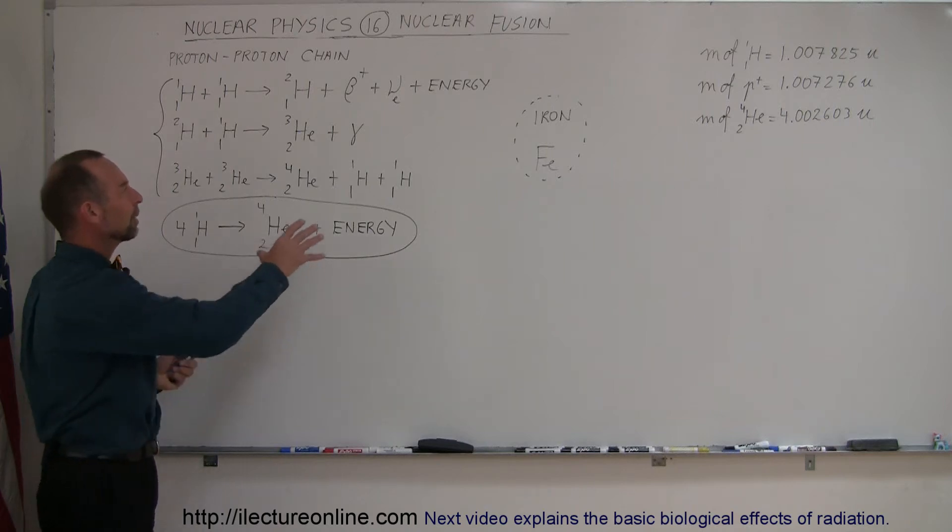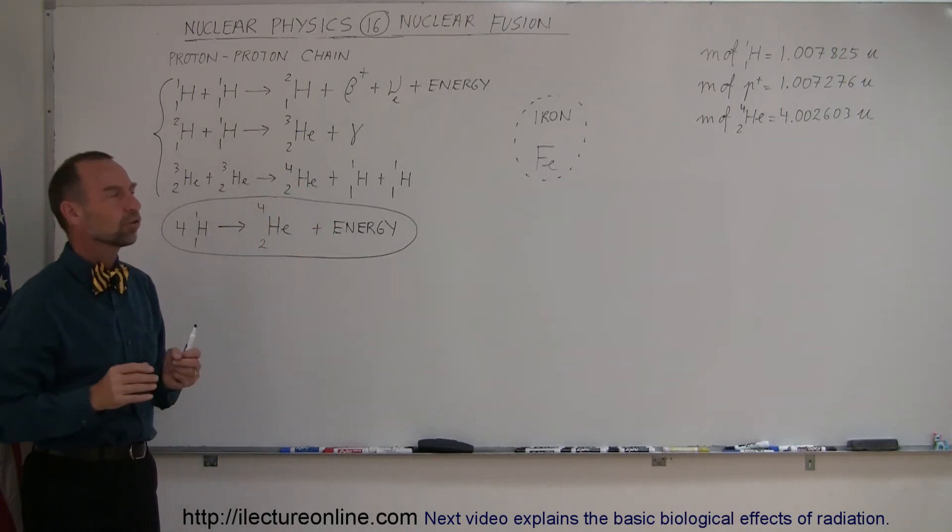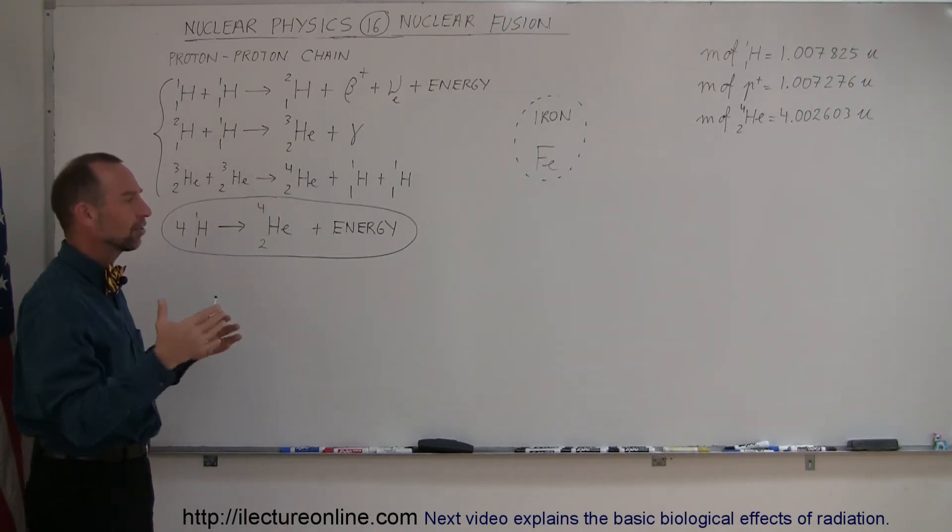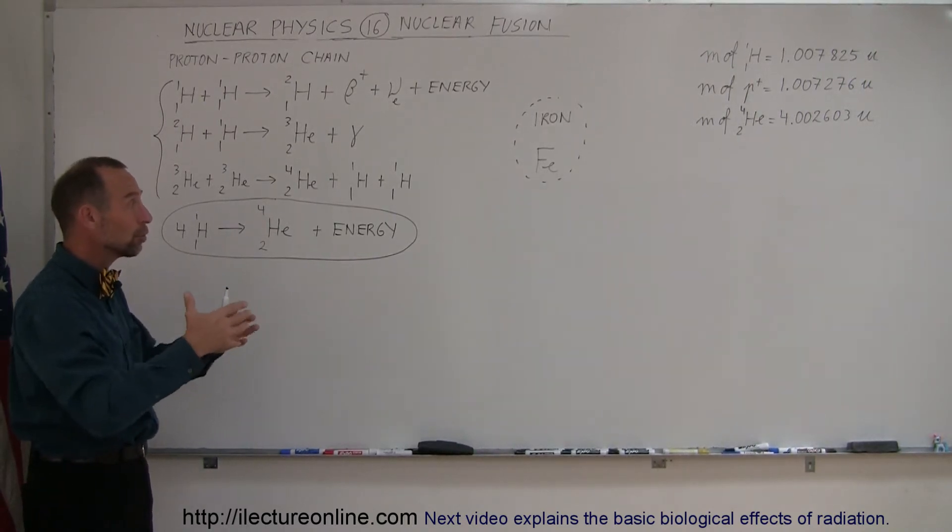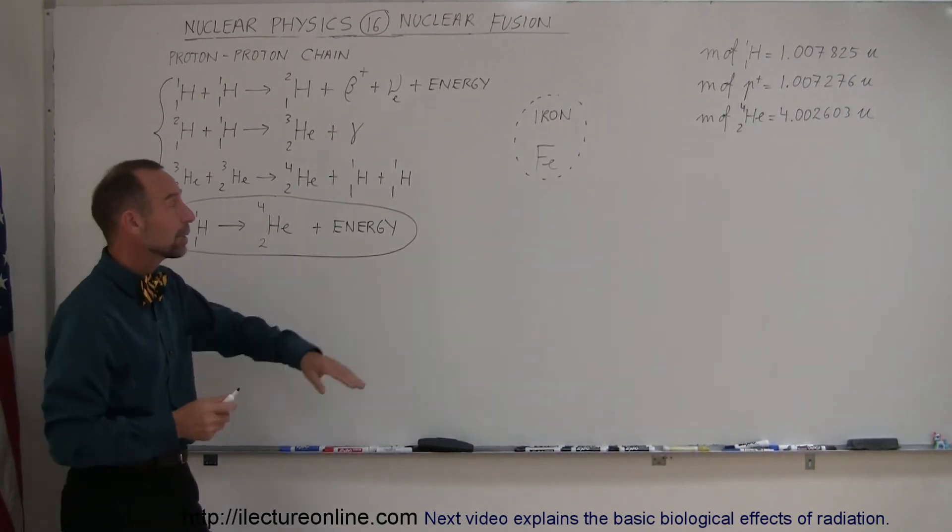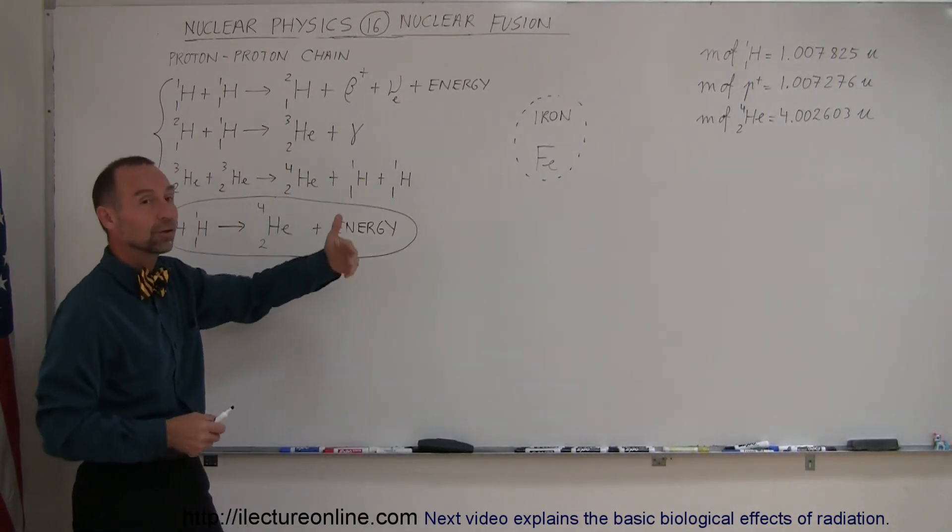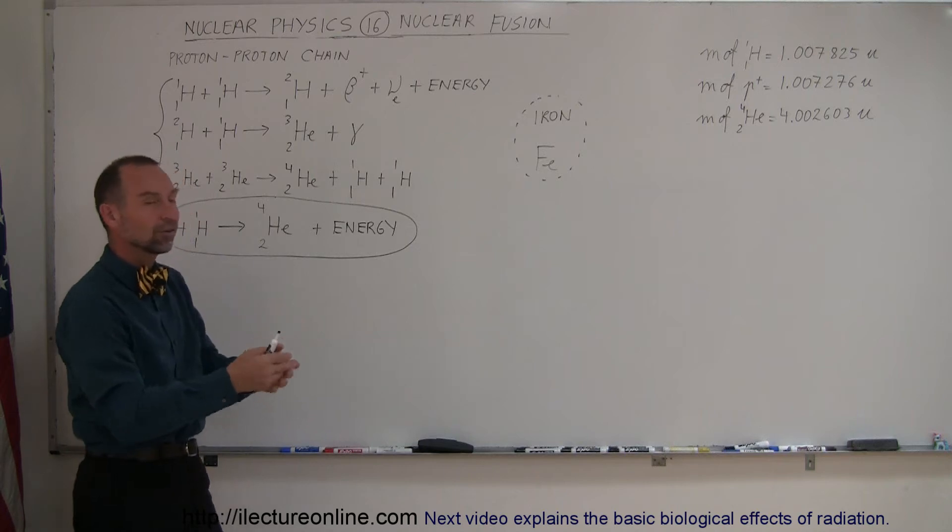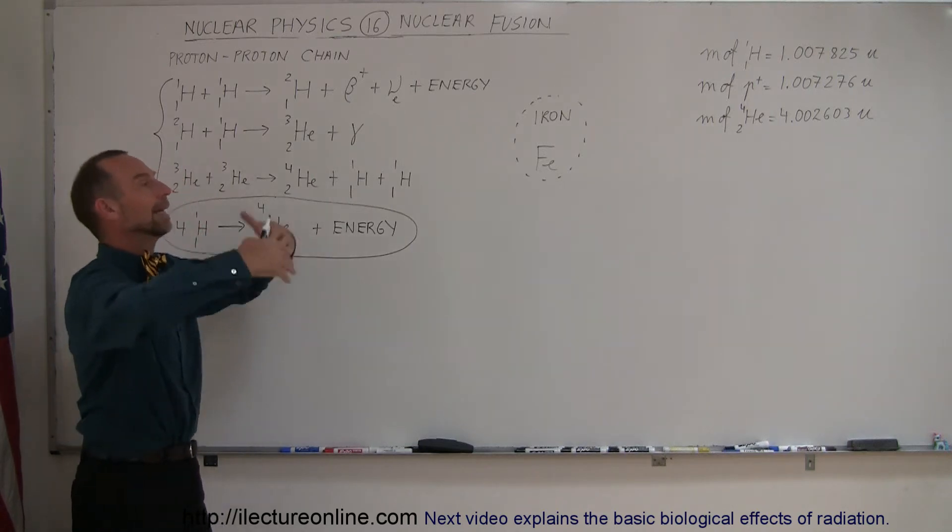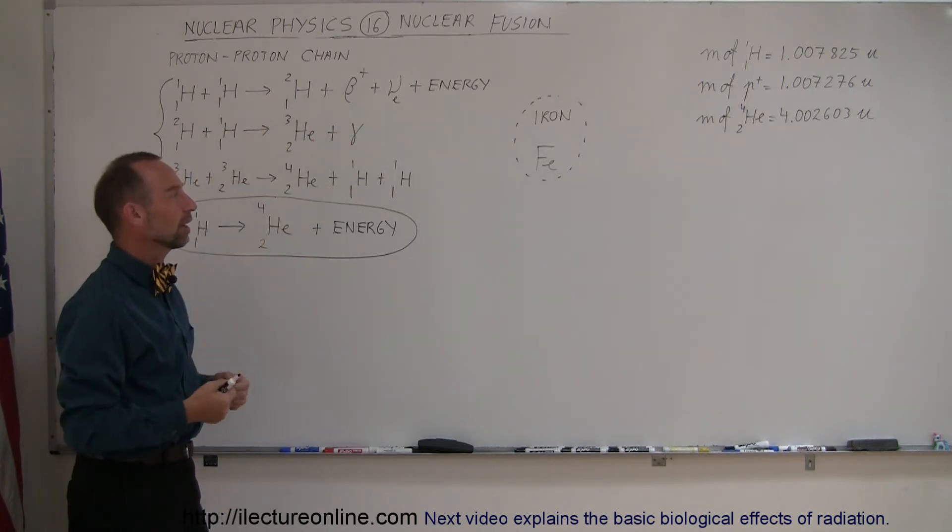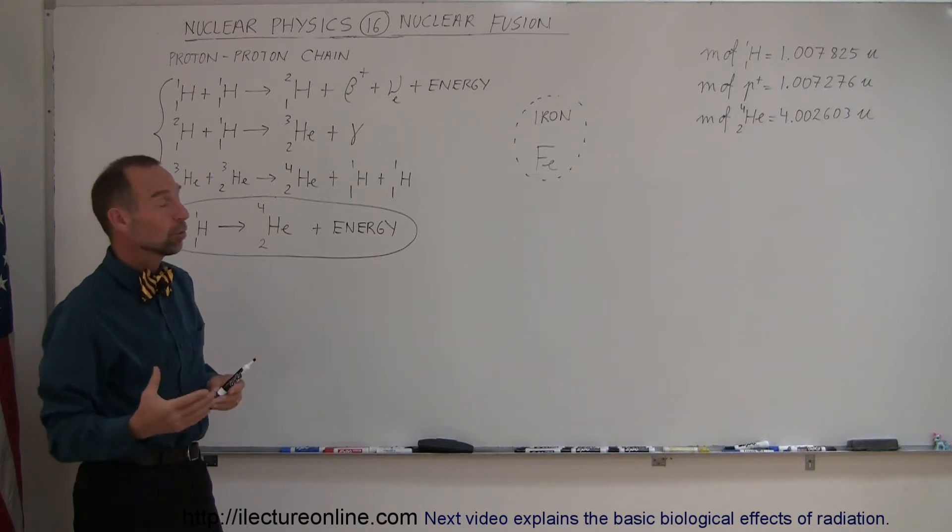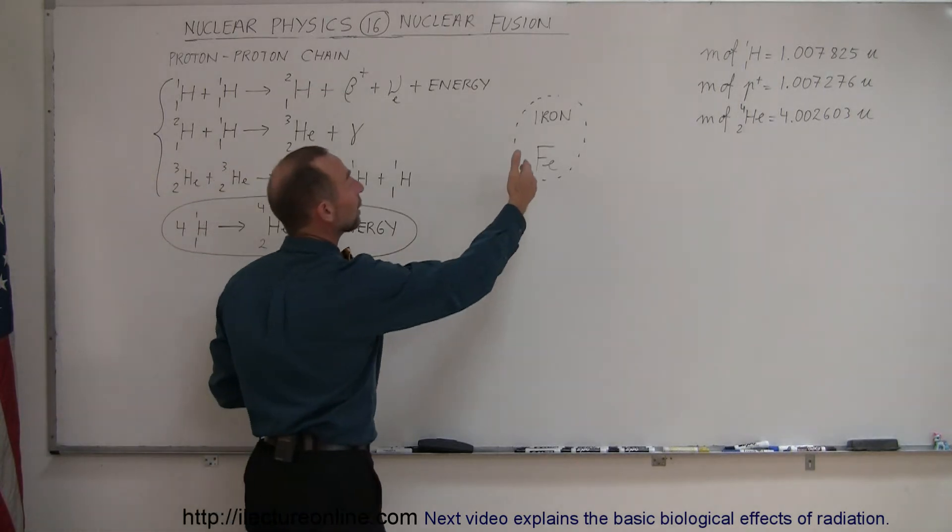This particular fusion process occurs in stars. Stars as they get to the end stage of their life and become red giants create more and more fusion reactions until they create iron. Since you cannot release any more energy by fusing iron into bigger atoms, that fusion process stops, the star implodes, and it explodes in a giant violent explosion called a supernova.